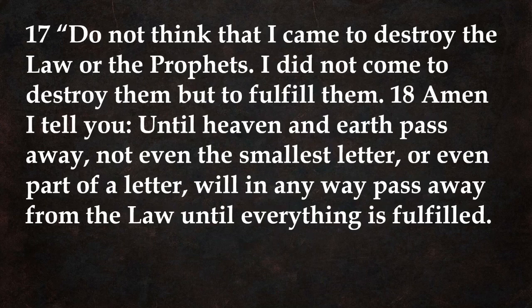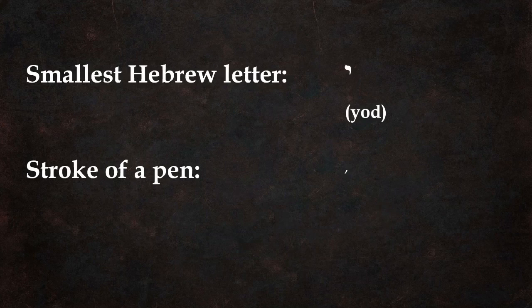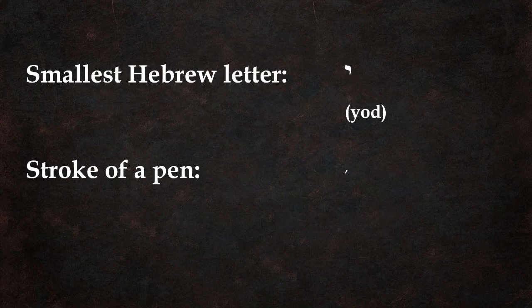You might remember that as 'jot or tittle,' or 'smallest letter,' or as the NIV says, 'the least stroke of a pen.' Here you have the smallest letter in Hebrew, which is Yod. In the more ancient alphabet that Moses used, the next letter over, Vav, would have been the smallest letter. Yod was quite a bit larger and written like a crazy Z in the ancient Phoenician alphabet.